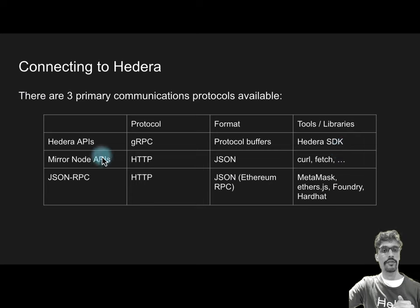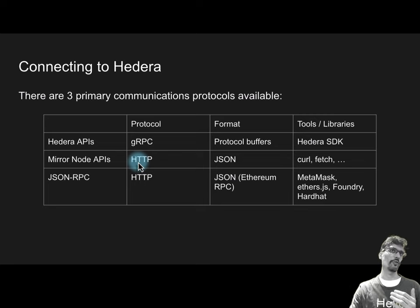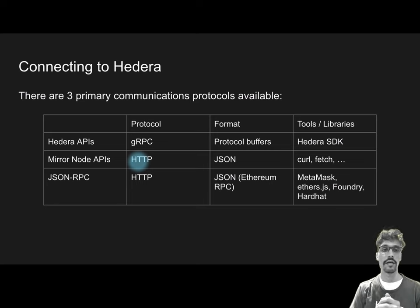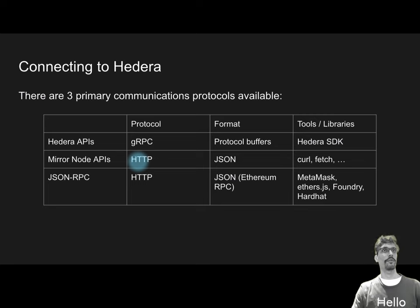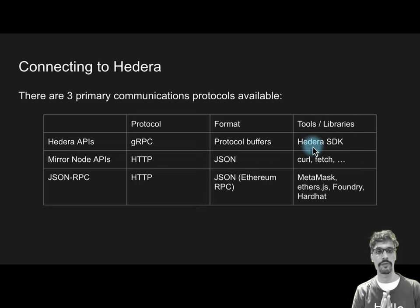The mirror node API is also very easy — it's just HTTP requests. If you've seen Stripe docs or Swagger docs, you'll be able to figure it out. Today we'll actually be exploring all three of these and you'll see how quickly you can learn them and how easy it is to develop on Hedera.